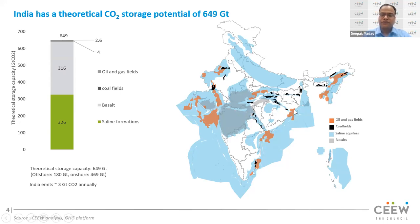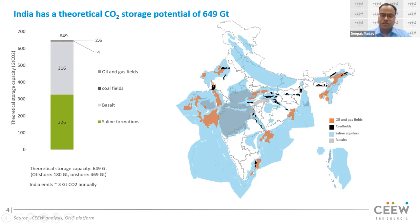Oil and gas fields are shown in orange, coal fields in black, saline aquifers in blue, and basalts — which store CO2 in the form of minerals — in grey. The states of Maharashtra, Madhya Pradesh, and Gujarat have significant basalt CO2 sequestration potential.